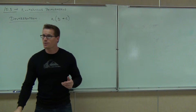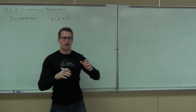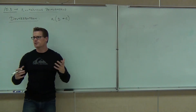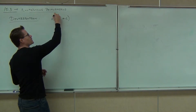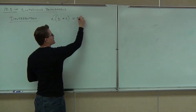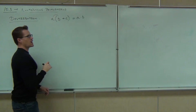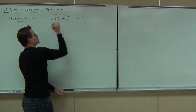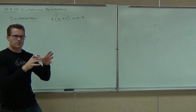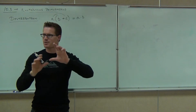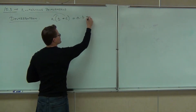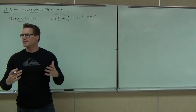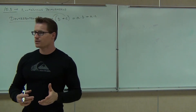We learned how to distribute a long time ago. Basically, when you have a term outside multiplied by a polynomial inside those parentheses, we can get rid of those parentheses by the process called distribution. That means we take our A, multiply it by our B to get A times B, and we also do A times C, with the signs taking care of themselves. A positive times a positive gives a positive, so we put plus A times C. That's our idea for distribution.